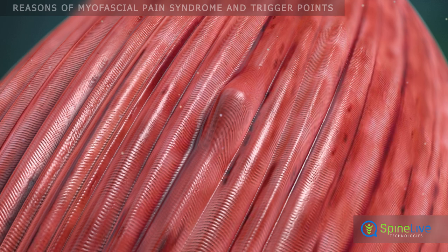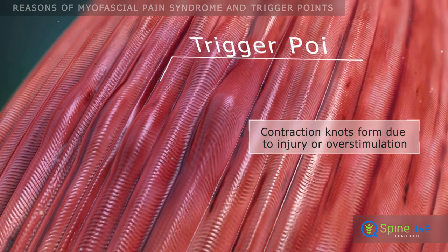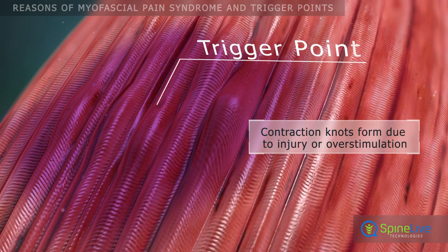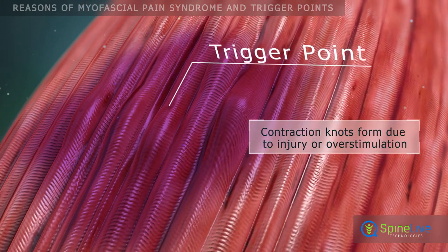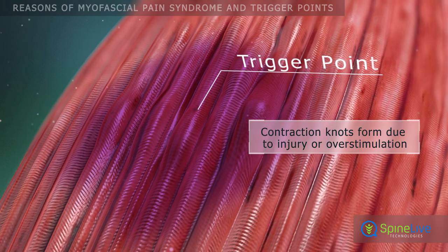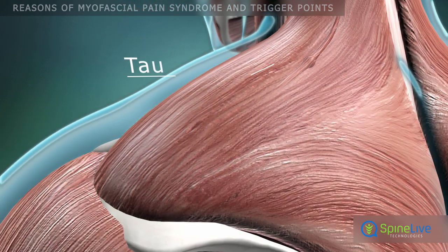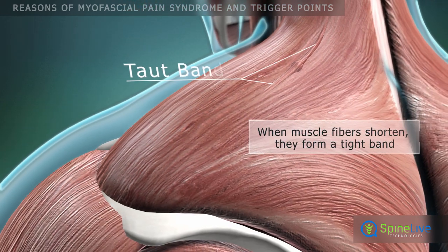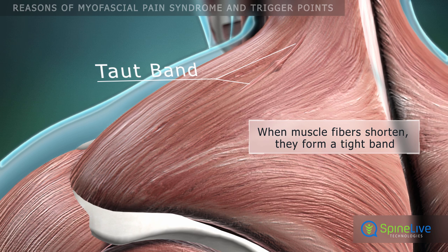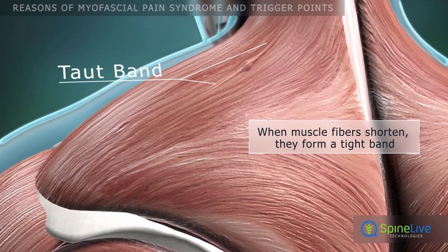A trigger point consists of many contraction knots, where individual muscle fibers contract and cannot relax. Fibers extending from the trigger point to the muscle attachments shorten and form a tight band.